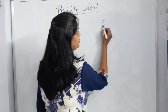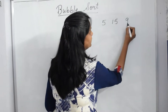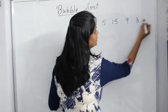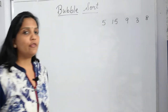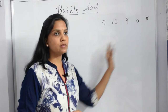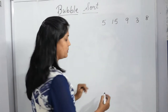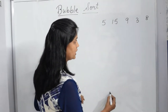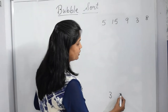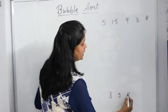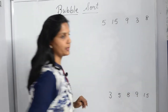Let's take the example: 5, 15, 9, 3, 8. We have to arrange these five numbers in ascending order, meaning we want the output as 3, 5, 8, 9 and 15.